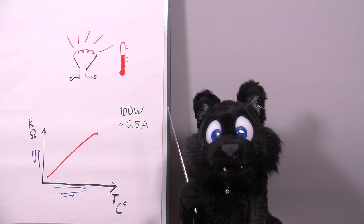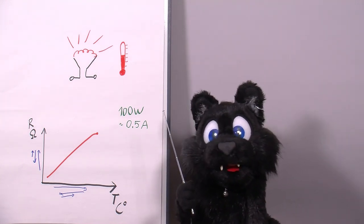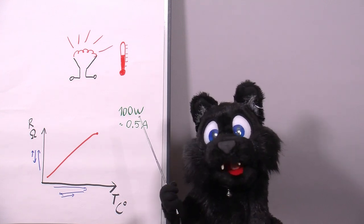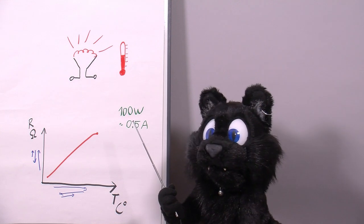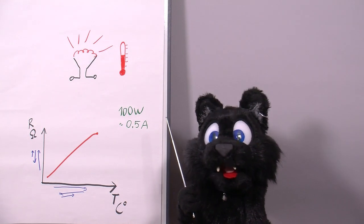A light bulb can be treated as a resistive load, but only after the initial turn-on phase. So my 100 watt bulb draws about 0.5 amps during normal operation. That is less than one tenth of the cold current.